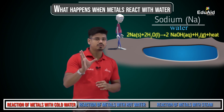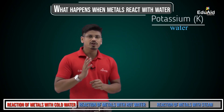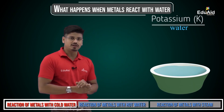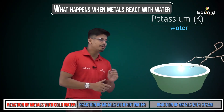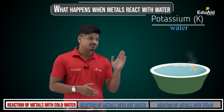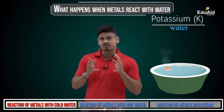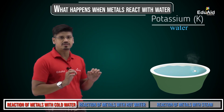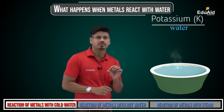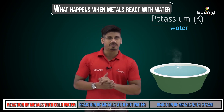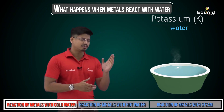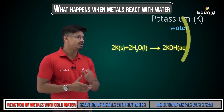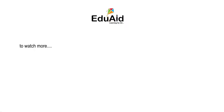Now let's look at the reaction of potassium with water. In a plastic container filled with water, as soon as a piece of potassium metal is placed on the water, it catches fire. This is because a huge amount of heat energy is released, which is enough for the hydrogen gas evolved during the reaction to catch fire. The reaction is: K + H₂O → KOH + H₂ + heat energy.